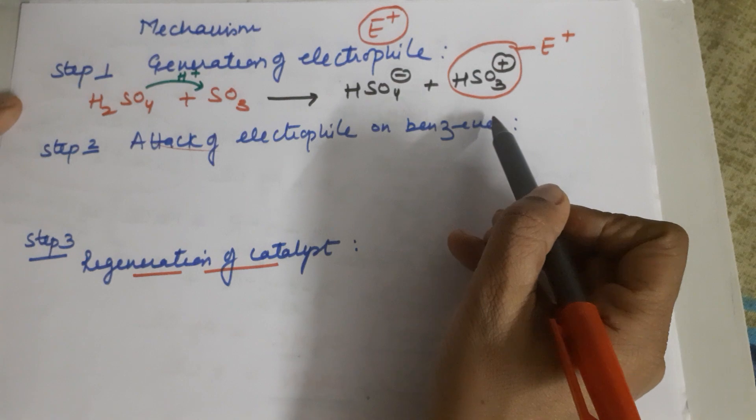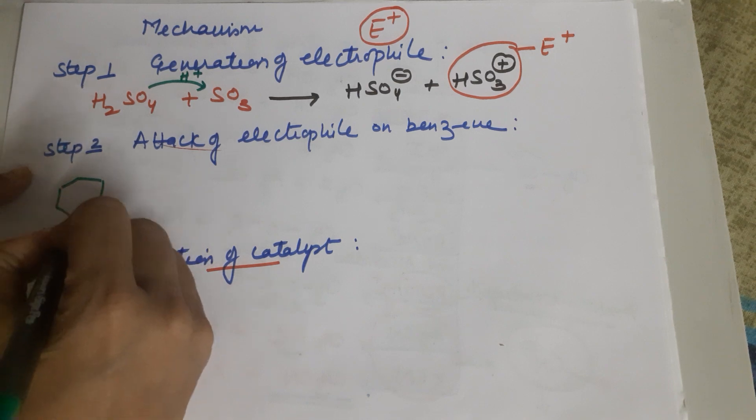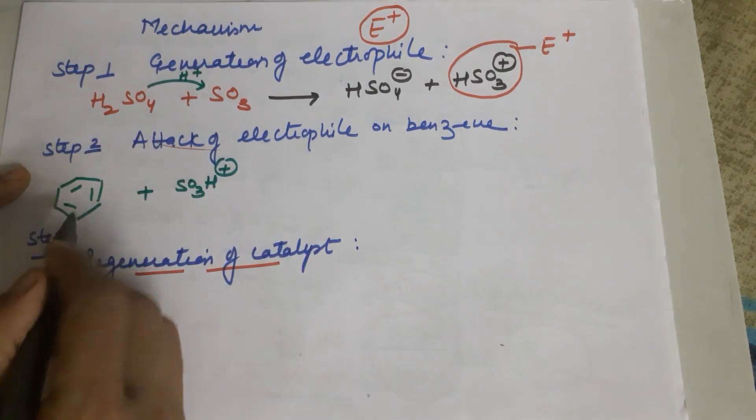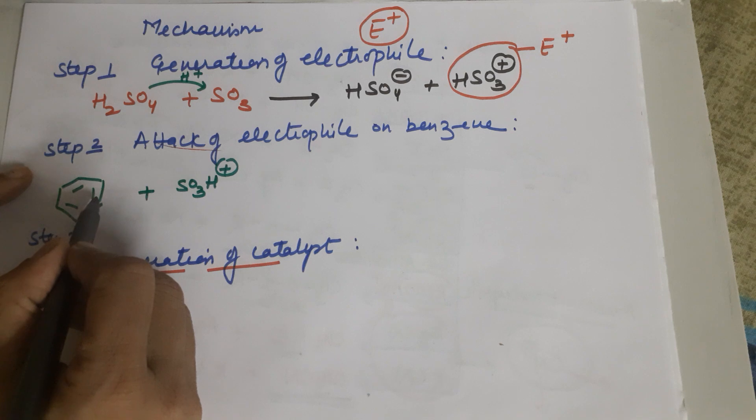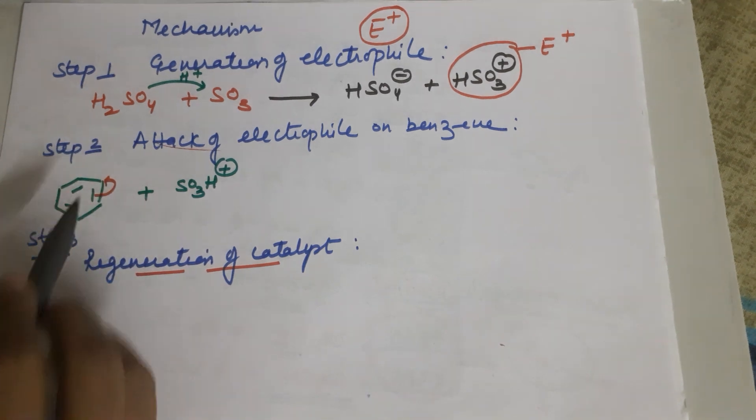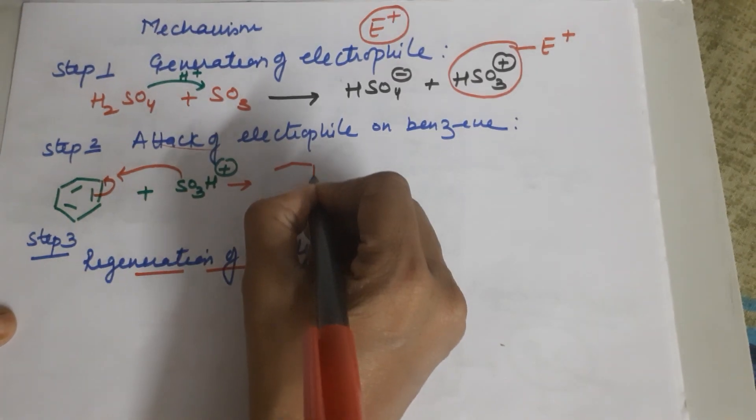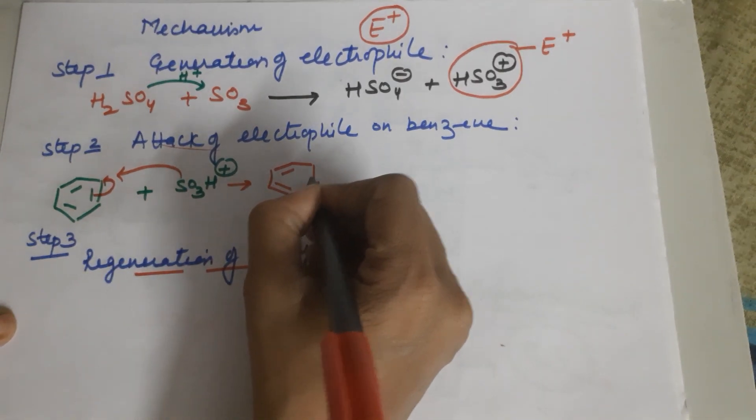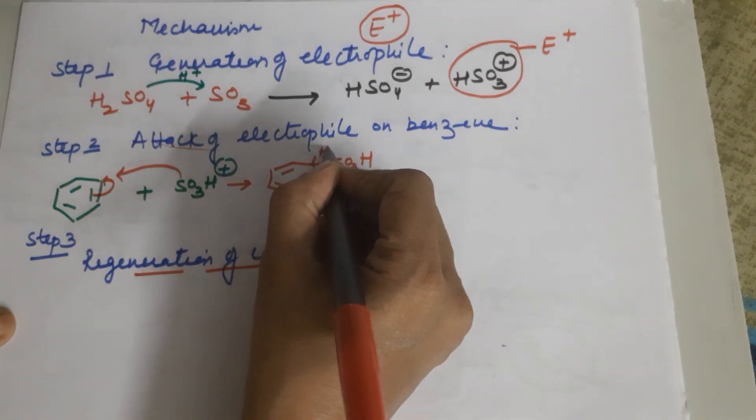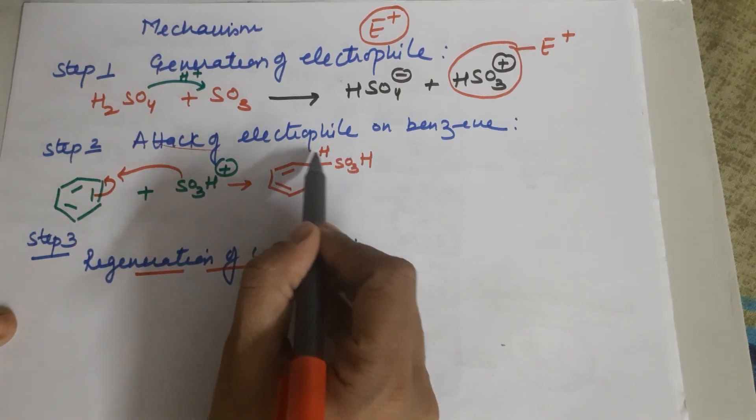Step 2 is attack of the electrophile onto the benzene ring. This is your benzene ring and this is your electrophile. The pi electron cloud goes here forming a negative charge which quickly attacks. This leads to benzene with only two pi bonds remaining. You get SO3H here. Every carbon has H, our interest is this H because it will be lost.